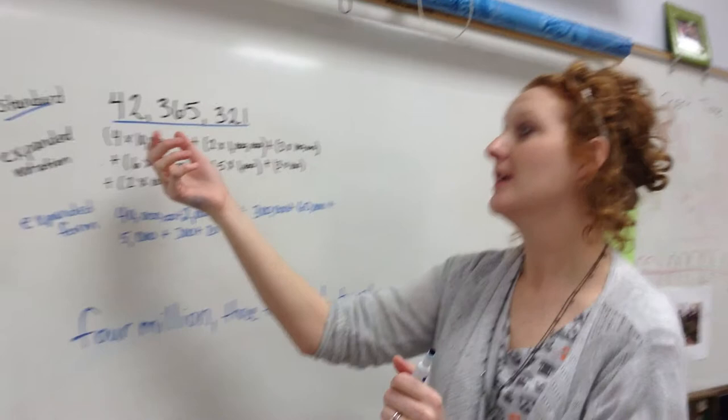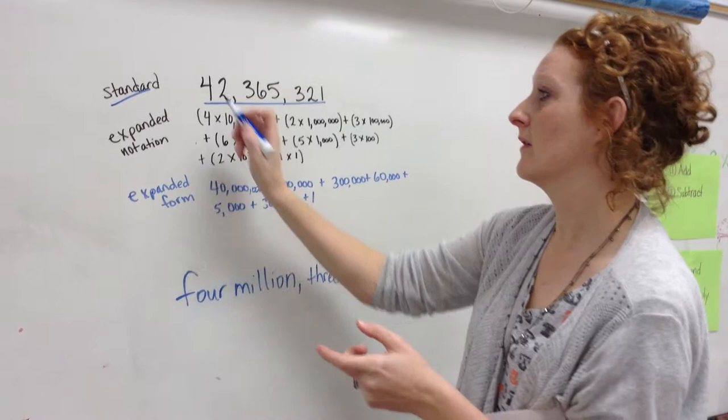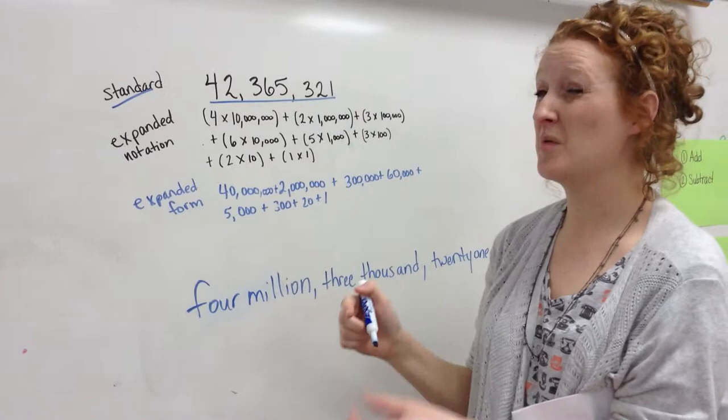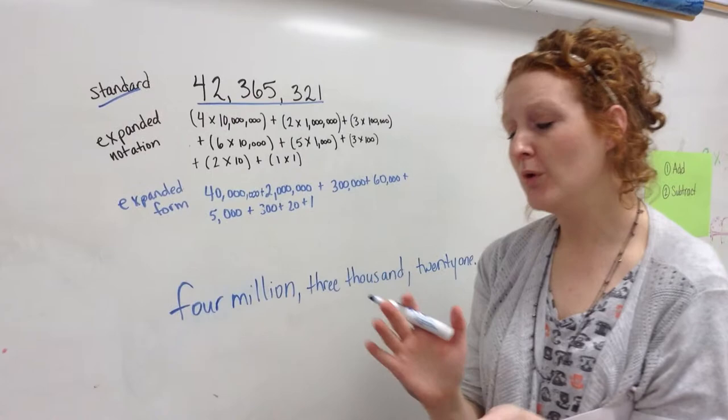Just some helpful tips in teaching this: one is that we teach the students to look at each period, so that way the whole big number is not overwhelming. So this would be like a hundred million, and I would read this as 42 million, 365 thousand, 321. We teach them to just look at three numbers at a time within those commas to be able to read the number.